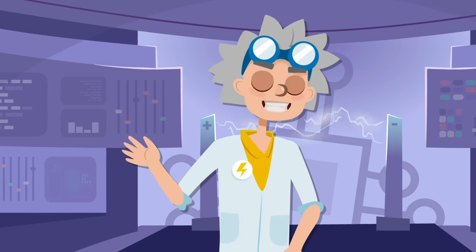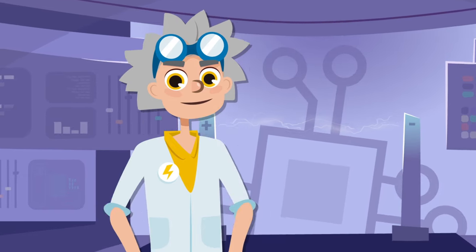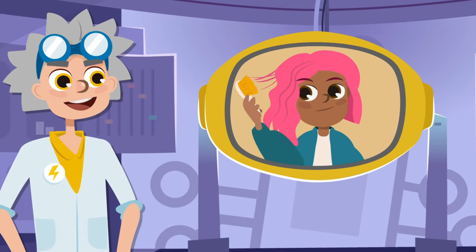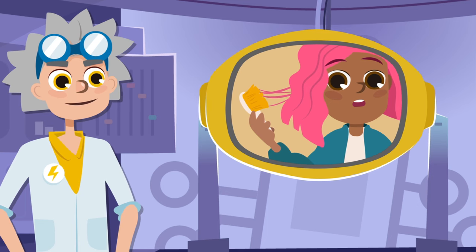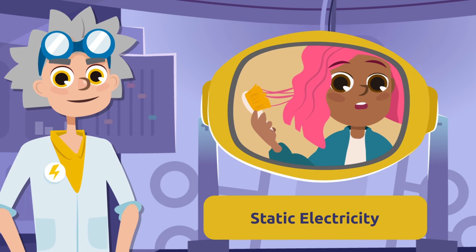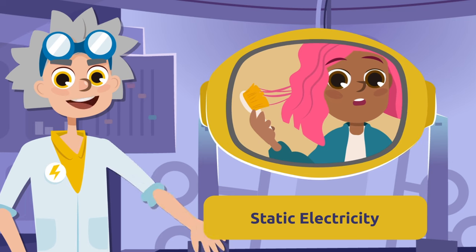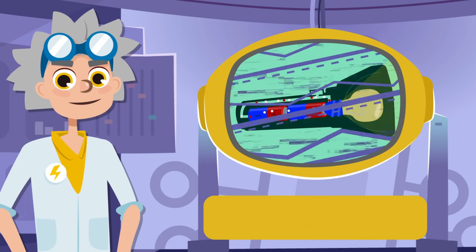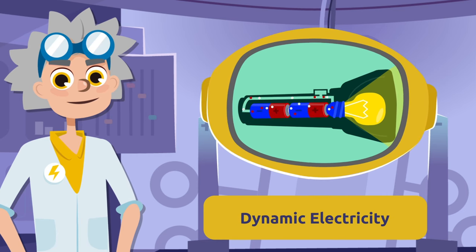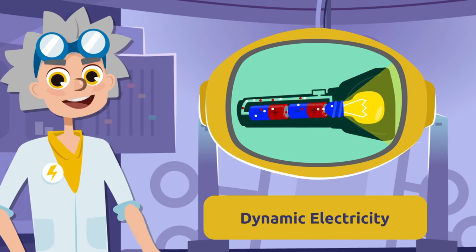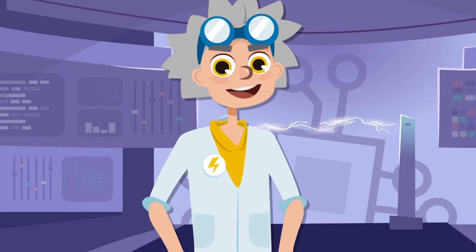Now that we've learned all about the types of electricity and circuits, let's see what you remember. An imbalance of positive and negative charges between two objects is called... static electricity! That's it! And the flowing of electric charge is called... dynamic electricity! Very good! Great job!